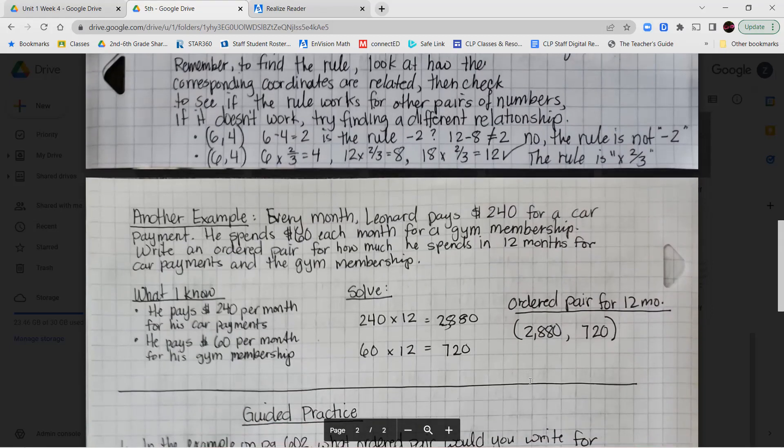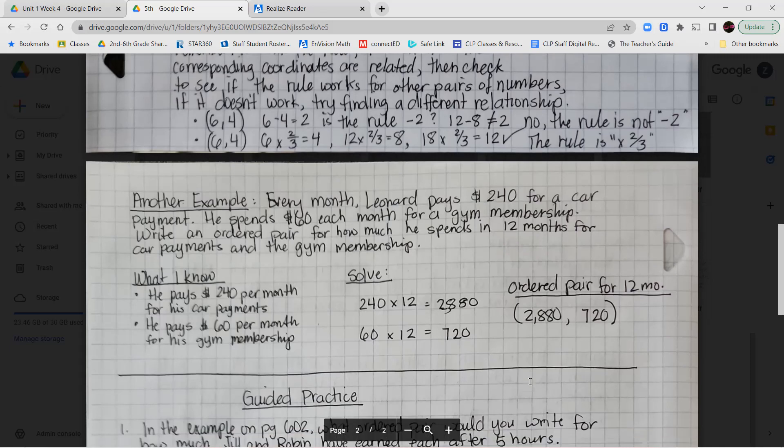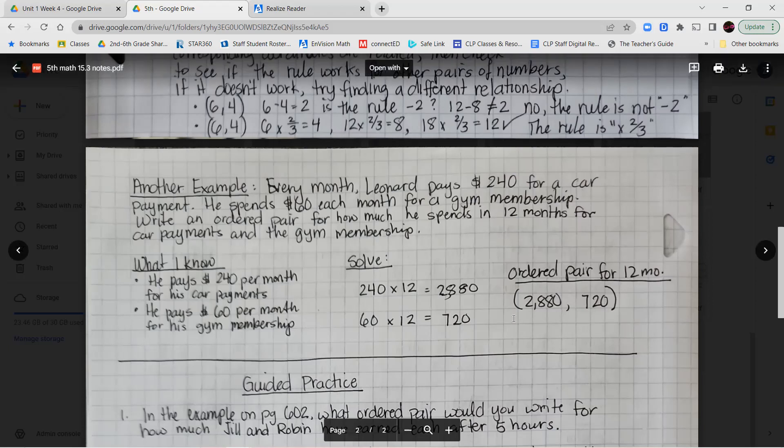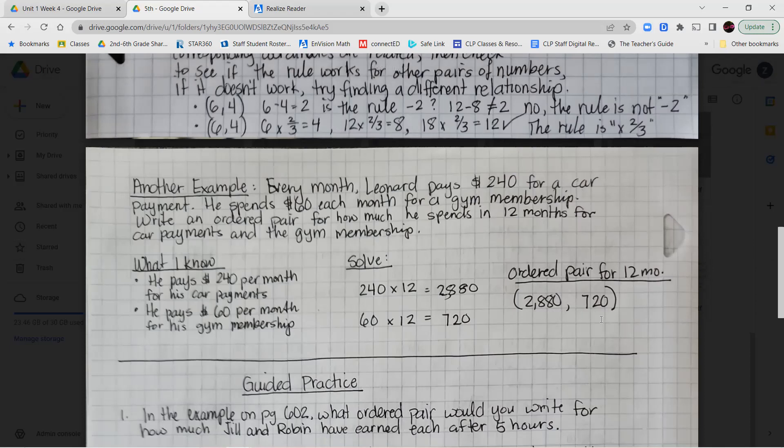Let's take a look at another example. It says every month Leonard pays $240 for a car payment and he spends $60 each month for a gym membership. Write an ordered pair for how much he spends in 12 months for car payments and his gym membership. So I know that he spends $240 a month for the car and $60 a month for the gym. So to figure out how much it is for a year, I'm going to have to multiply each one of those times 12. So 240 times 12 gave me $2,880. 60 times 12 gave me $720. So the ordered pair for the car payment and the gym membership after 12 months is going to be at point $2,880 and $720.